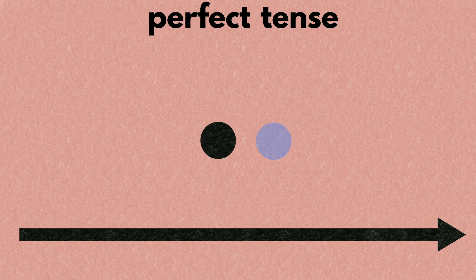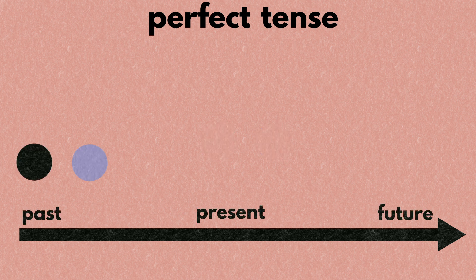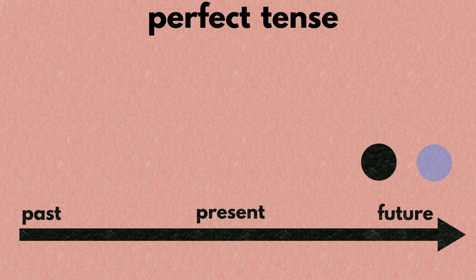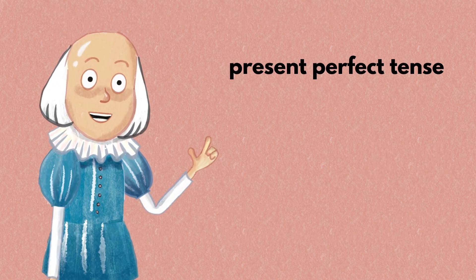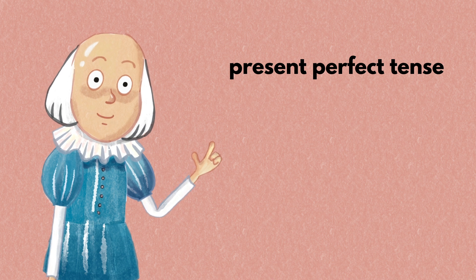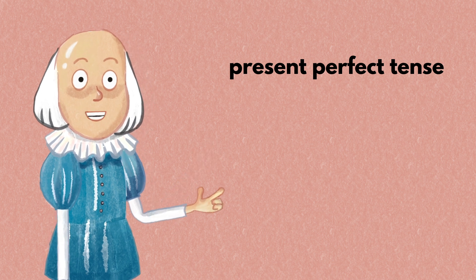The second piece of meaning is called the perfect tense. It means that an action happens before another action. If in the past an action happened before another action, it is called the past perfect tense. If in the future an action happens before another action, it is called the future perfect tense. The present perfect tense is a bit special, so I'll deal with it later.